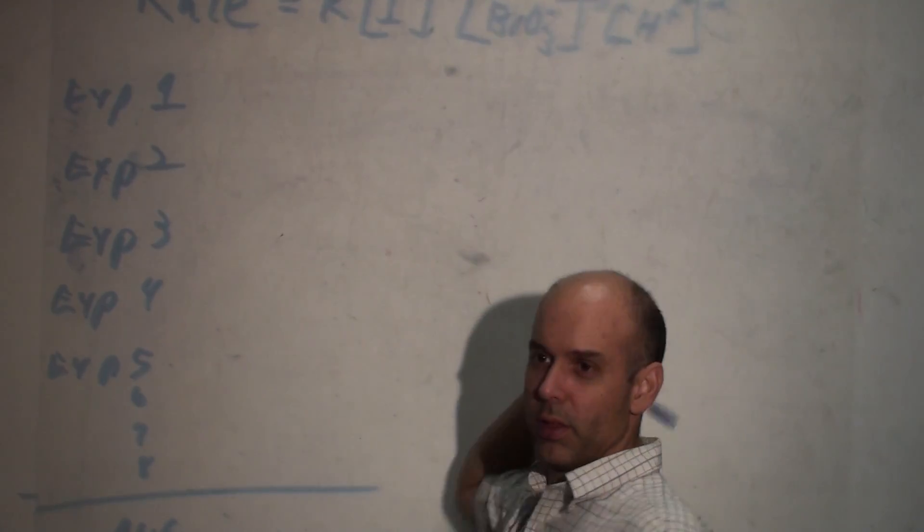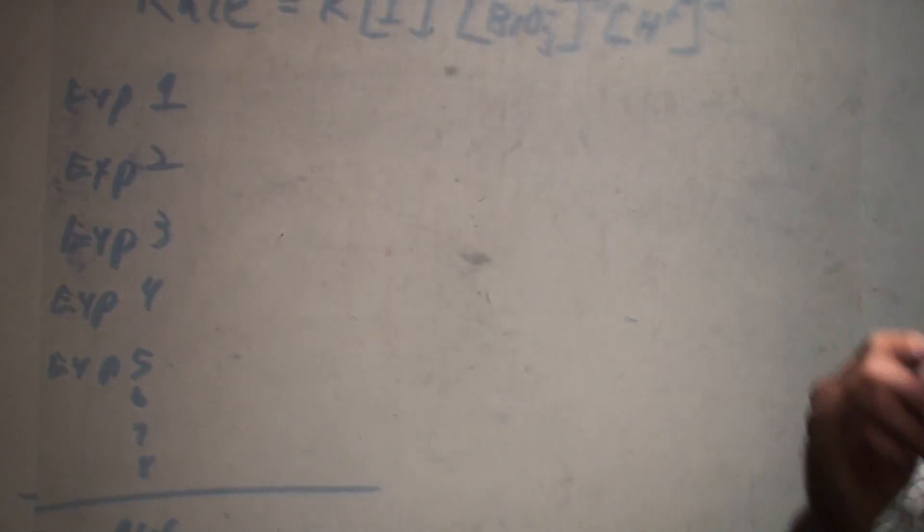Oh, it is. It is 1, 1, 2. That's the real number values. But still, use your data. Use your answers. But if you got 1, 1, 2, that's the correct rate orders. But use your own rate orders from calculating tags.